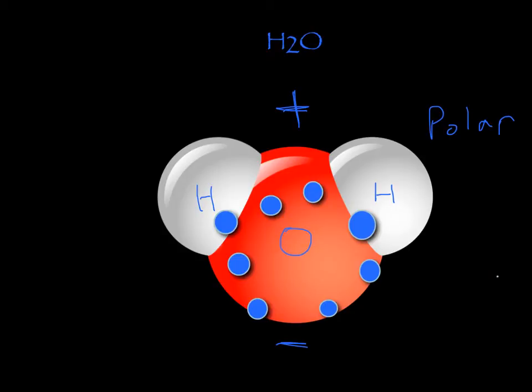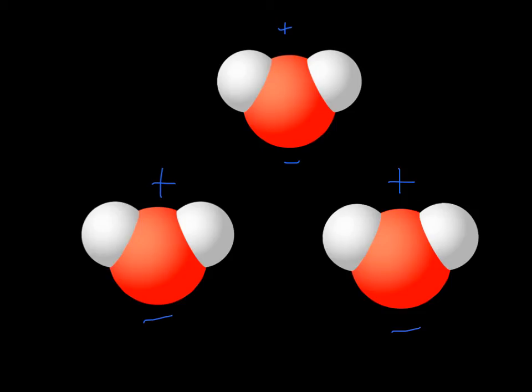This polarity is going to cause the water molecule to have unique properties. Let's see what happens when there are multiple water molecules. Notice how each water molecule is polar. It has a positive side and a negative side, and this occurs for all three of these water molecules. The positive side of one water molecule is going to become attracted to the negative side of another water molecule, so this attraction or bond is going to arise. This is known as a hydrogen bond.